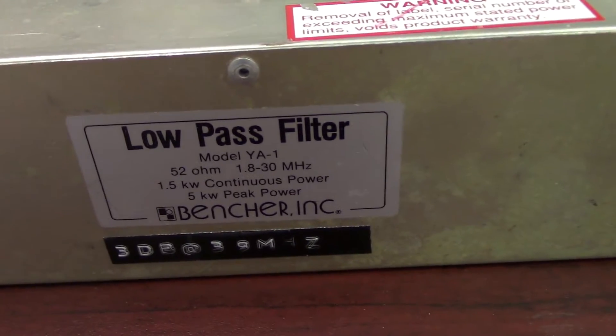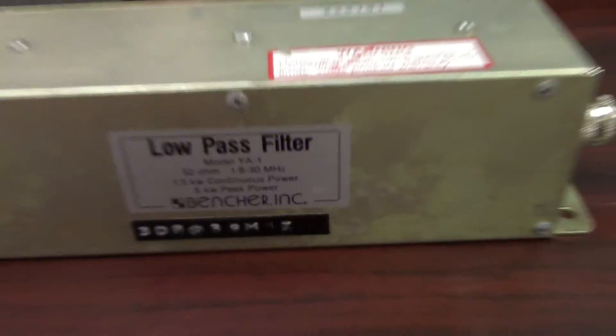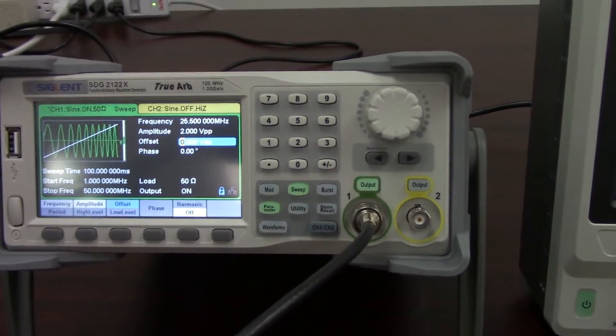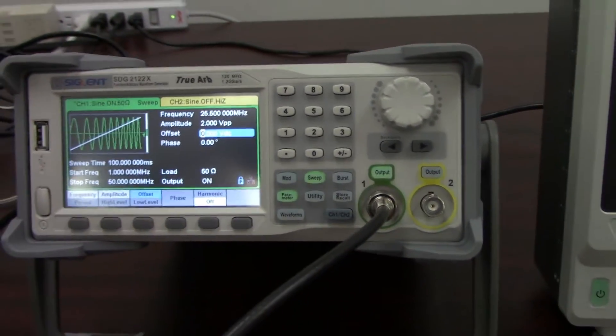So we have our RF filter. This one runs from 1.8 to 30 megahertz. And so I selected an SDG2000, the 2122X.